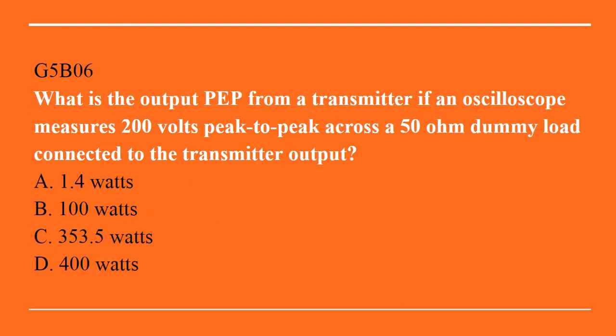G5B06: what is the output PEP from a transmitter if an oscilloscope measures 200 volts peak-to-peak across a 50 ohm dummy load connected to the transmitter output? A. 1.4 watts. B. 100 watts. C. 353.5 watts. Or D. 400 watts. Correct answer is B: 100 watts.